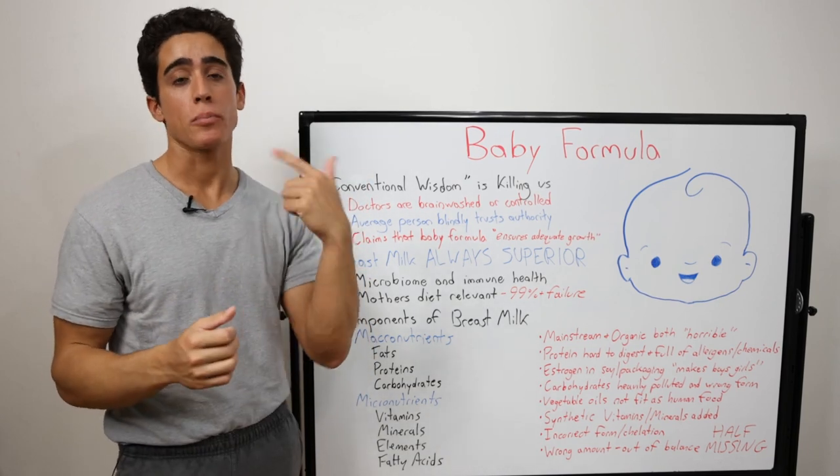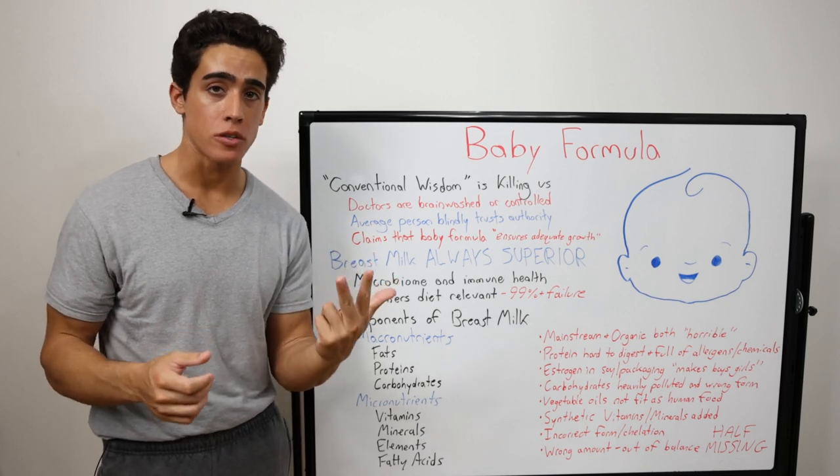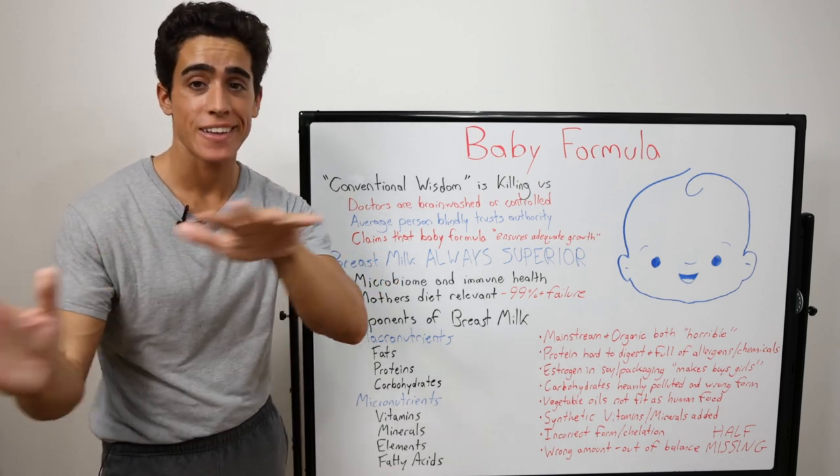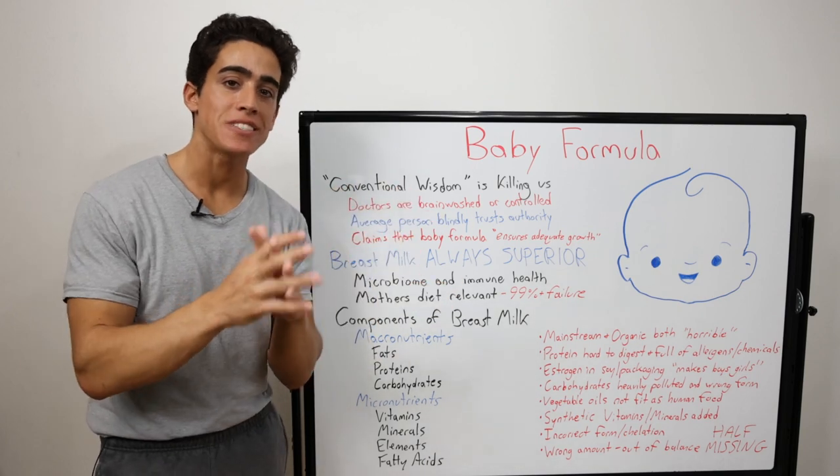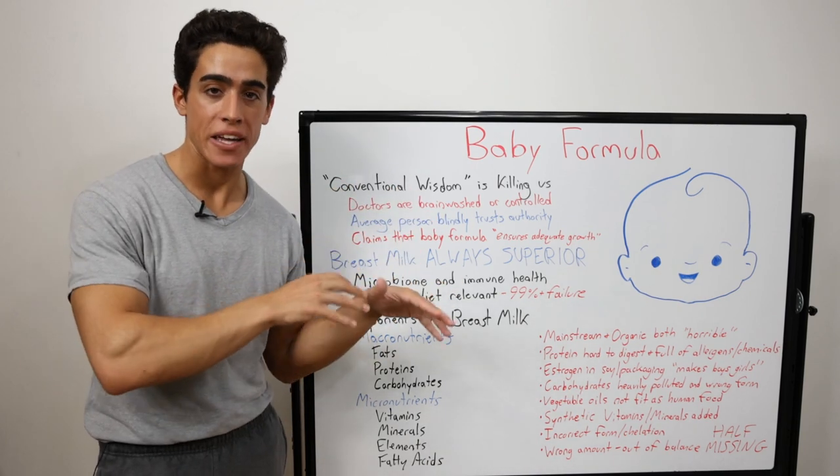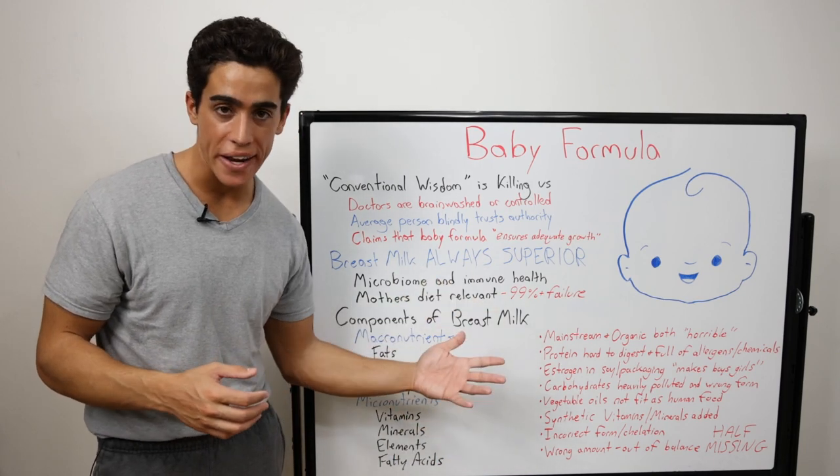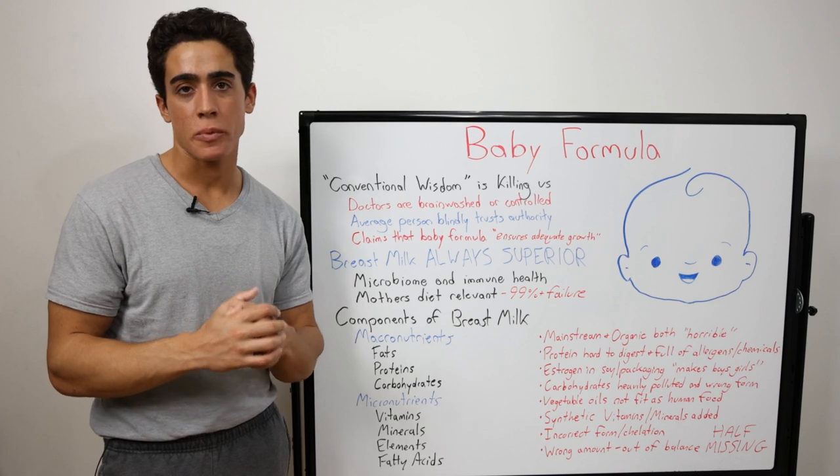Because soy protein, brown rice syrup, and vegetable oils are basically void of micronutrient nutrition, it's like a clean slate, they have to physically add chemical powders back in. If the form, if the chelation was correct, and the ratio was right, it would be okay to supplement a few of them.